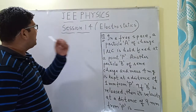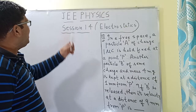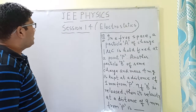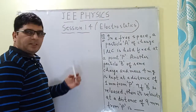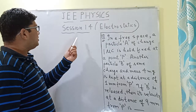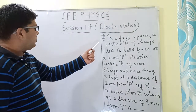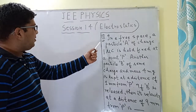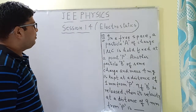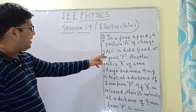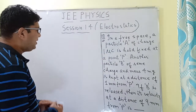Welcome back students. Today is session 14 of JEE Physics and the chapter is electrostatics. I'm taking this session after the Bauli festival. The question here on the board is: in free space, a particle A of charge 1 microcoulomb is held fixed at a point P.